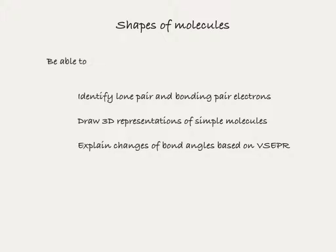By the end of today's lesson you should be able to identify lone pair and bonding pair electrons, draw 3D representations of simple molecules, and explain changes of bond angles based on valence shell electron pair repulsion.